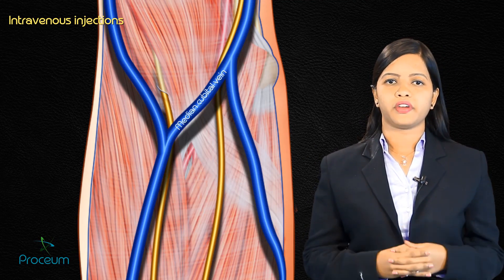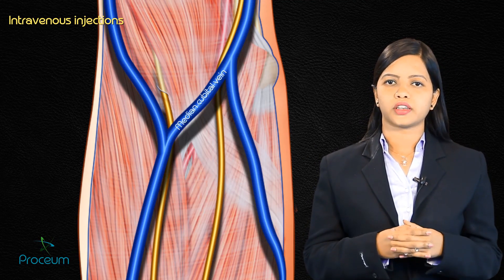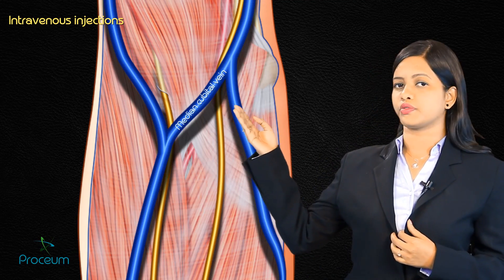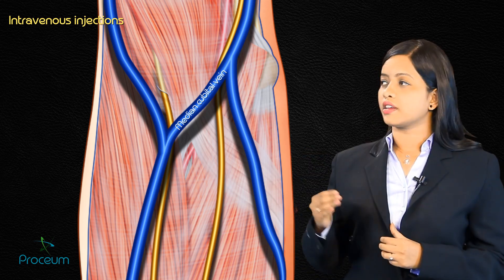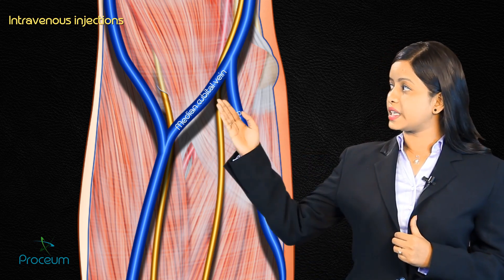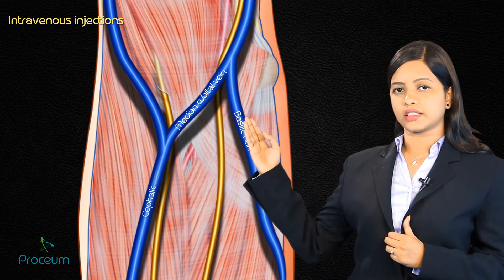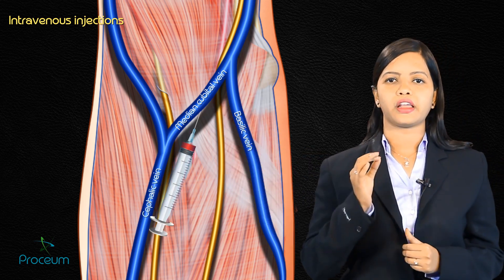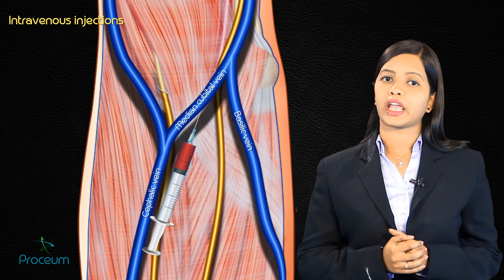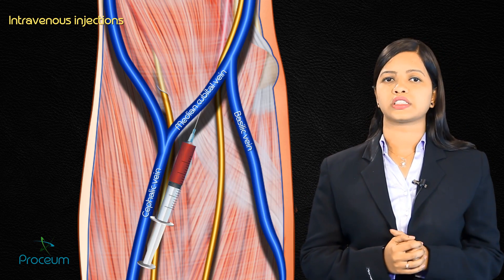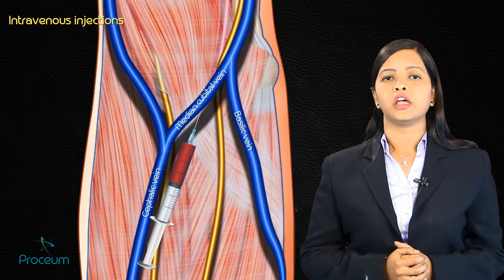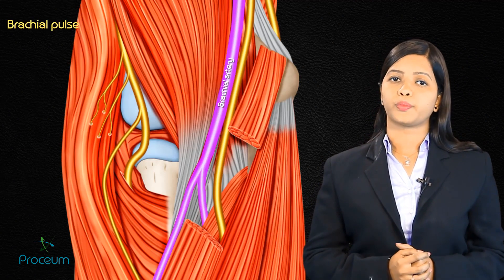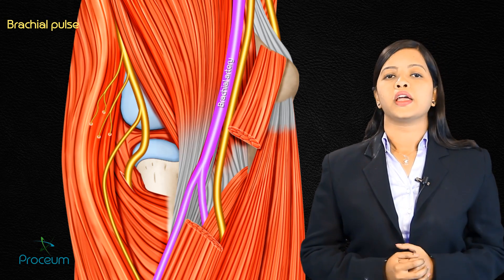The first clinical relevance is intravenous injections. The medial cubital vein is located superficially within the roof of the fossa; it connects the basilic and cephalic veins and is easily accessed for venous approaches.